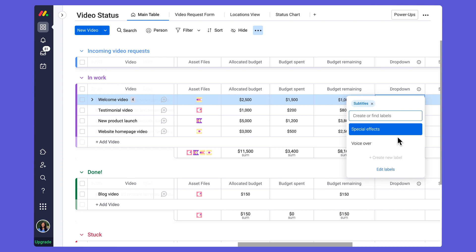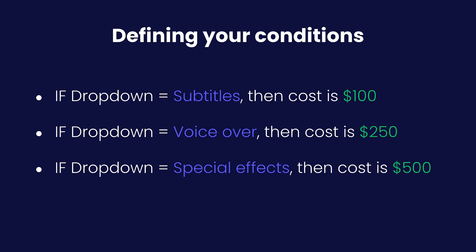So what exactly does this mean? Let's go over to my slides for more context. I have associated costs or fees according to the different services selected from my drop-down. If the drop-down label equals subtitles, the cost is $100. If it equals voiceover, the cost is $250. And if it equals special effects, the additional fee is $500.